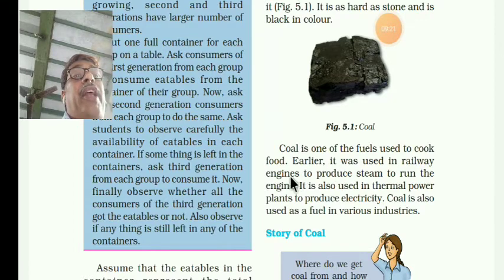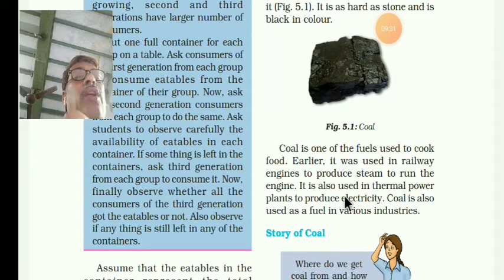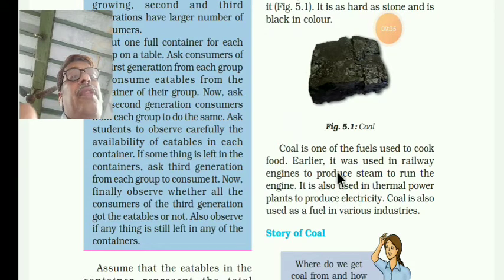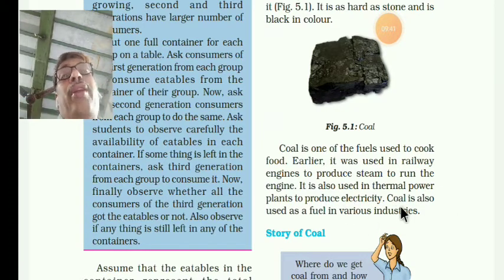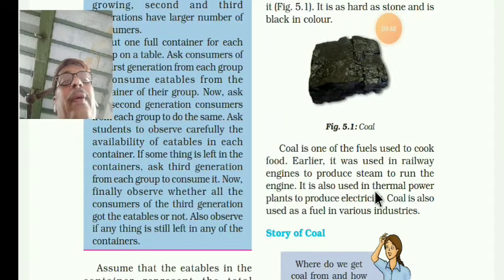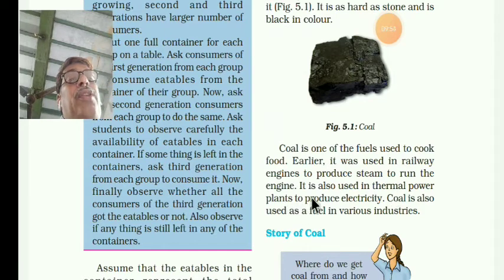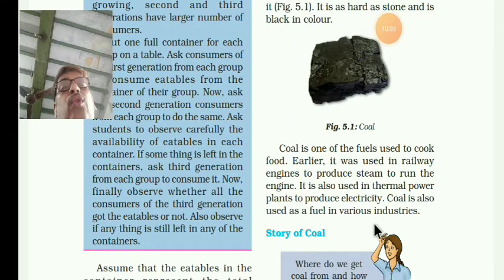Earlier, coal was used in railway engines to produce steam — water vapour — to run the engines. It is also used in thermal power plants. Thermal power plants use coal for generating electricity, to run the turbine. The power plants that use coal to produce electricity are called thermal power plants.